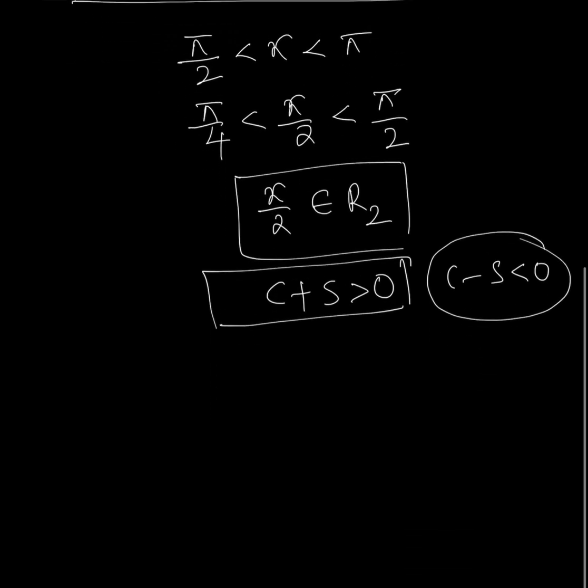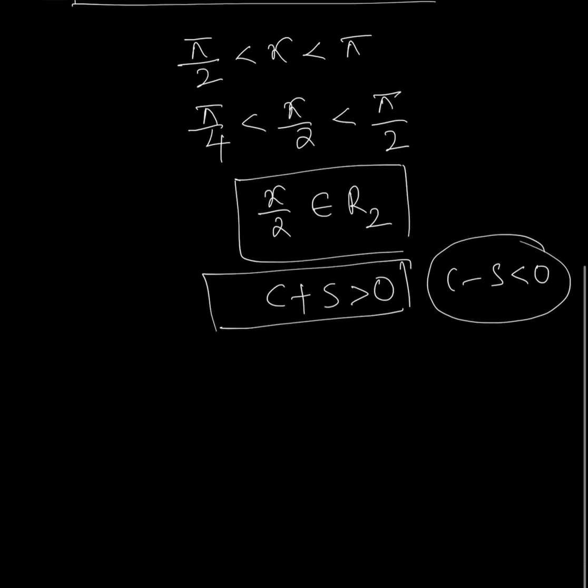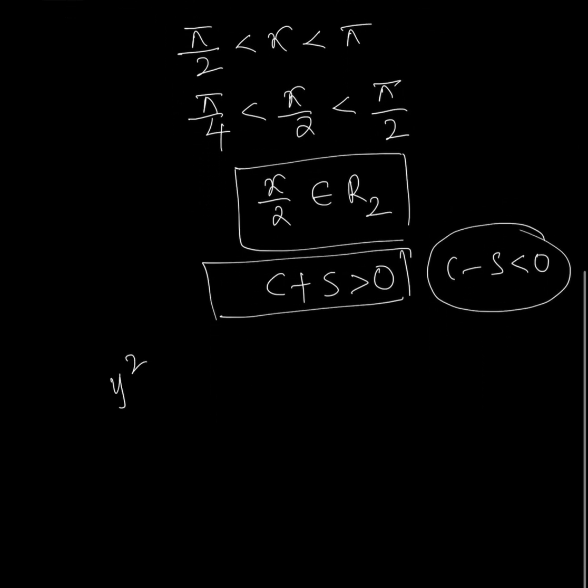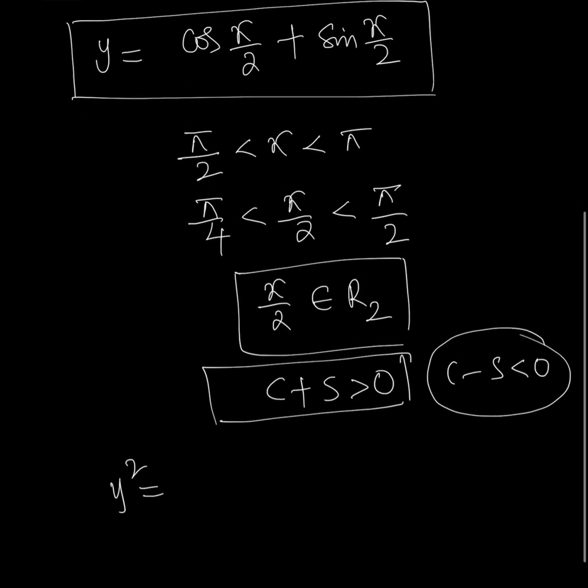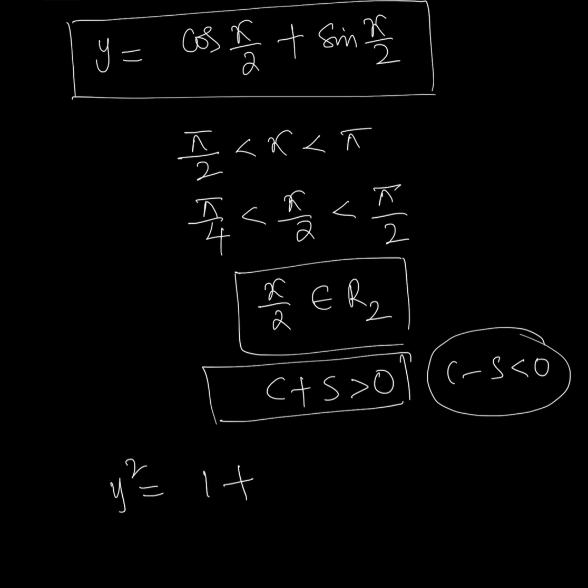We need to find cos(x/2) + sin(x/2), which is always positive. Squaring both sides: y² = [cos(x/2) + sin(x/2)]² = cos²(x/2) + sin²(x/2) + 2sin(x/2)cos(x/2) = 1 + sin x.